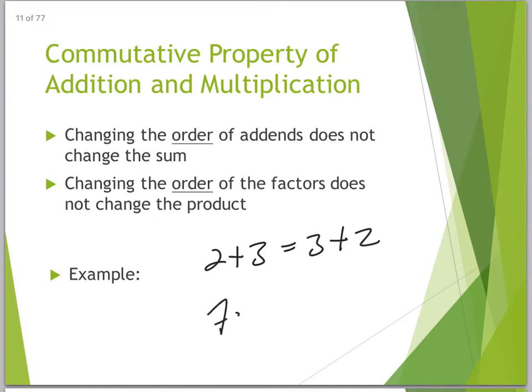Or 7 times 5 is the same as 5 times 7. I commuted them, I moved them, and they have the exact same value in both cases.